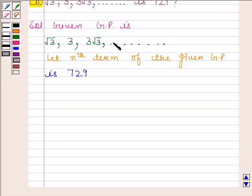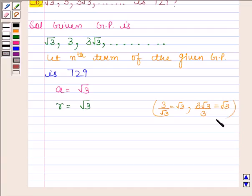Now, in the given GP, first term that is A is equal to root 3 and common ratio that is R is also equal to root 3. We know that we can obtain R by dividing any term by its preceding term, so R is equal to root 3.